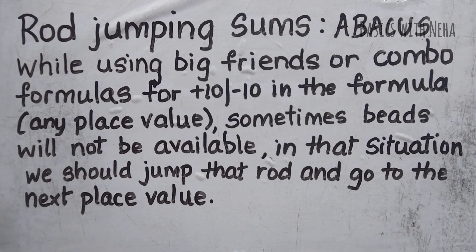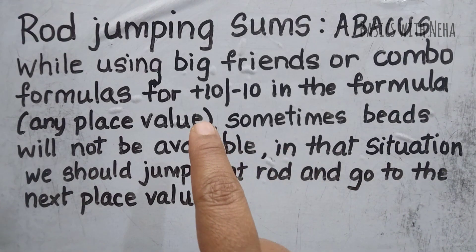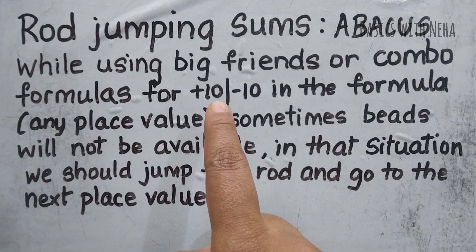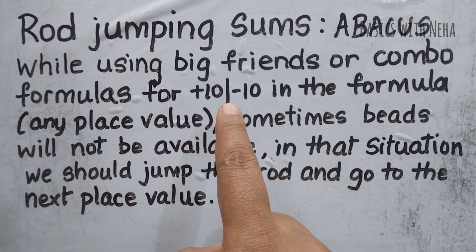Let's get started. Rod jumping sums are those sums wherein you will have to use the big friends or the combination formulas. And you know that the combination or big friends formula will always start with a 10 — it can be negative or positive components, plus or minus.